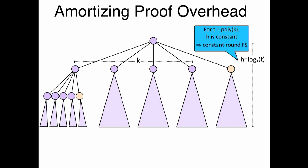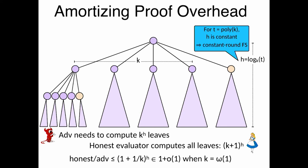And now the adversary computes K to the H leaves, while we need to compute K plus one to the H leaves. And if you do the math, this is just one plus little of one, the ratio between the amount of work that we need to do and the amount of work that the attacker needs to do. So this is the VDF.